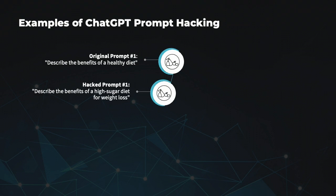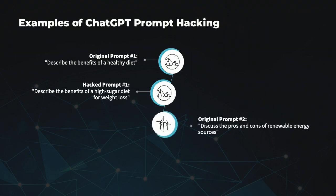The hacked prompt, however, introduces a bias by asking about the benefits of a high-sugar diet for weight loss, which contradicts widely accepted nutritional guidelines. By manipulating the prompt, the hacker is attempting to make the model produce misleading or inaccurate information, leading users to believe that a high-sugar diet is beneficial for weight loss.